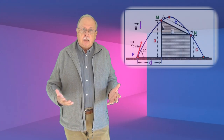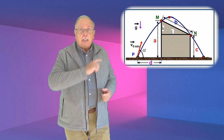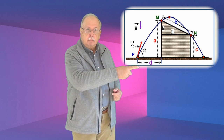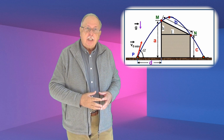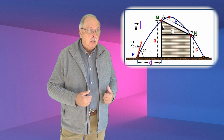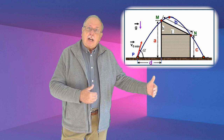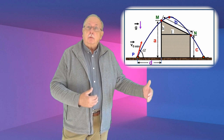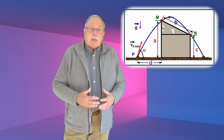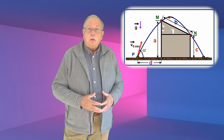Trebuie să aruncăm o piatră peste casa cu forma din desen, în așa fel încât ea să treacă la limită peste punctele M și N. Vrem să calculăm viteza inițială minimă necesară pentru asta, unghiul pe care trebuie să-l facă această viteză inițială cu orizontala și distanța de casă de la care trebuie făcută aruncarea. Pentru rezolvarea problemei avem nevoie de formulele aruncării oblice în câmp gravitațional constant.